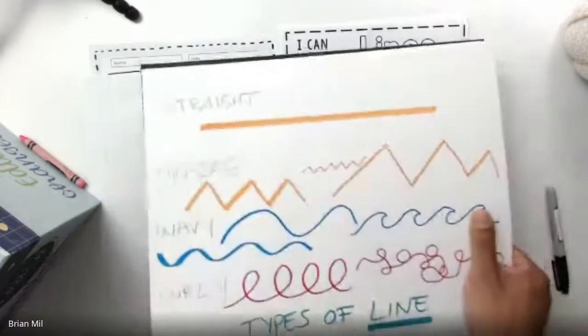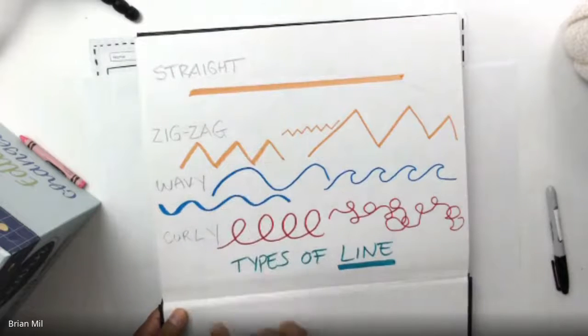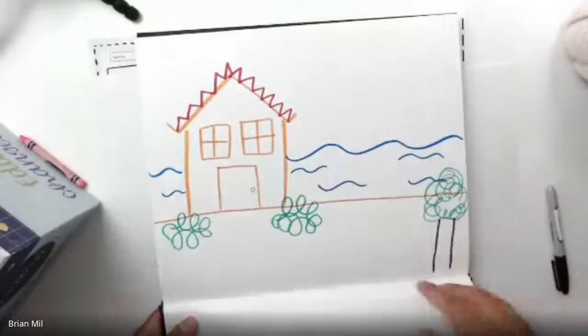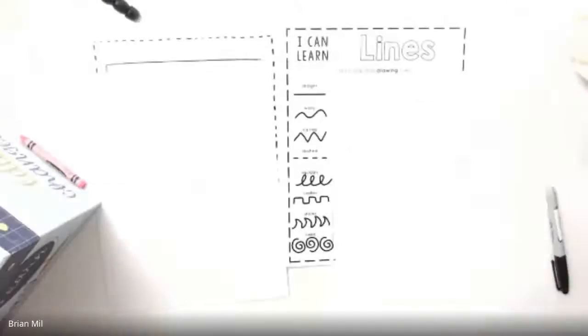This was right here. So I think we did this on week two, we talked about straight, zigzag, wavy, and curly lines and then we made a picture out of it. Yeah, we made a picture out of it. So in this workbook it's kind of like going over what we talked about already.